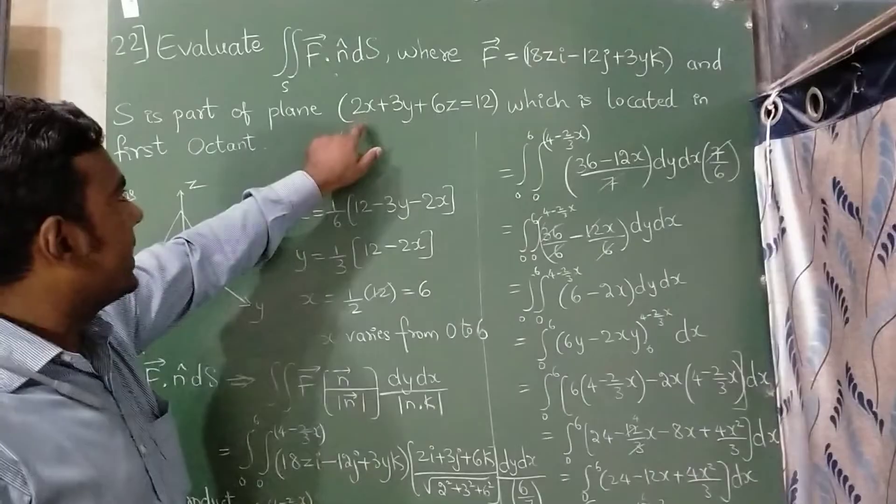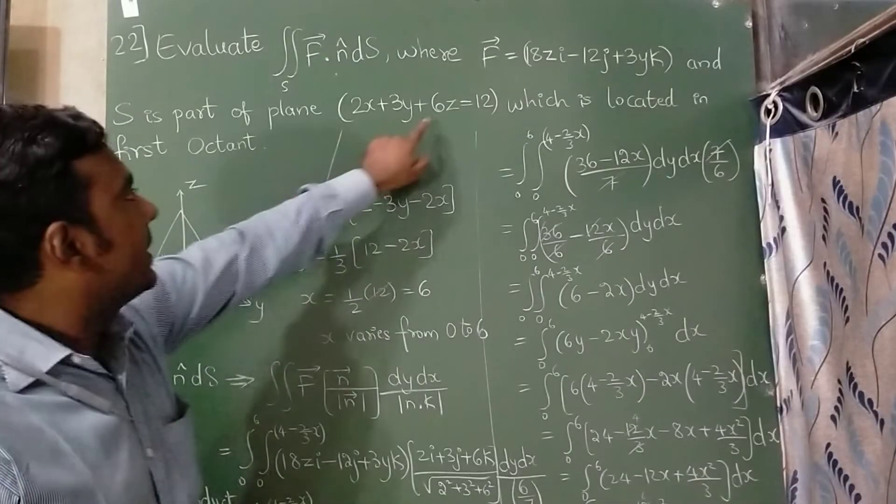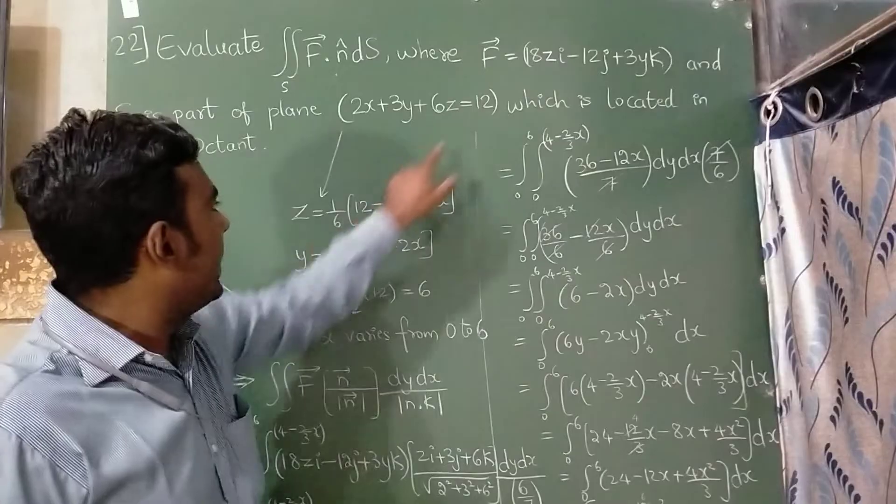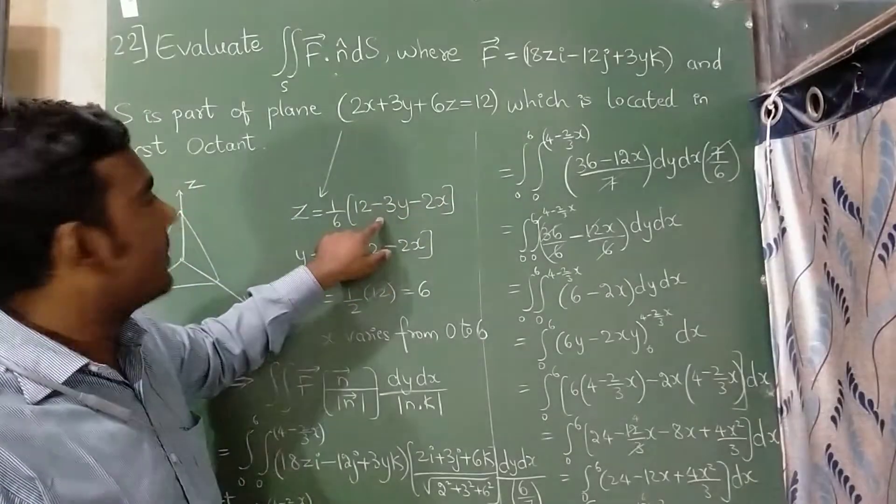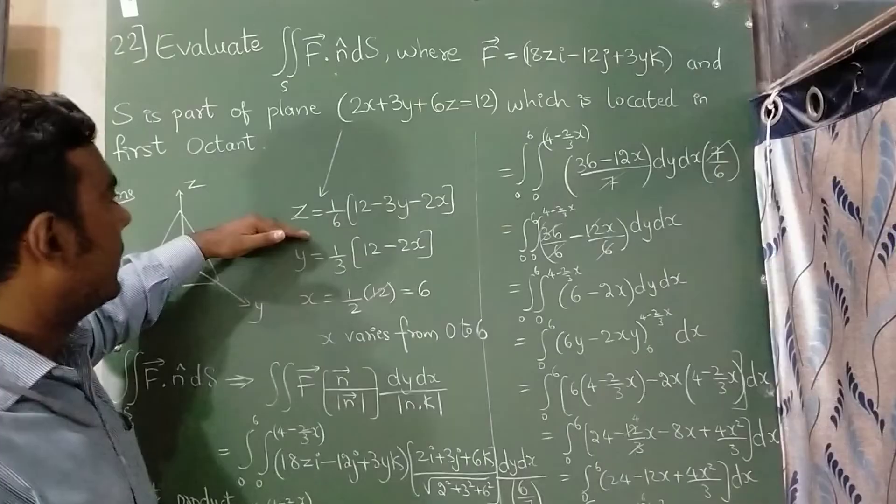So from this equation, what I have done is I have written z here. This 6 comes in the denominator, so 1 upon 6, 12 is written here. Take this plus 3y on the right hand side, it will become minus. Take this 2x on the right hand side, it will become minus.